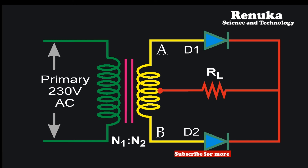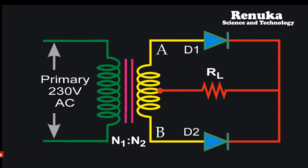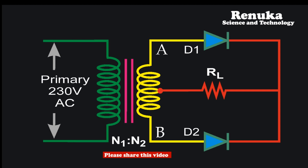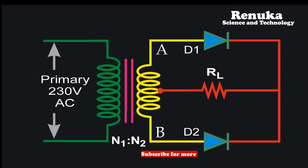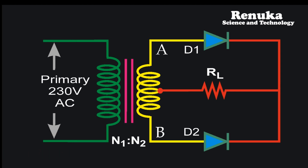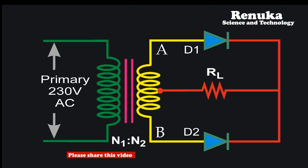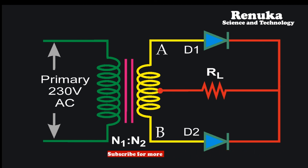This center tap transformer is used to construct a full wave rectifier. In the circuit diagram, the secondary coil is divided into an upper coil and a lower coil. Two half wave rectifiers are used, each connected to one winding of the secondary coil. The anodes of the diodes are connected to their respective windings, and the output is taken between the common cathode point and the center tap (ground) point, with load resistance connected between these two terminals.